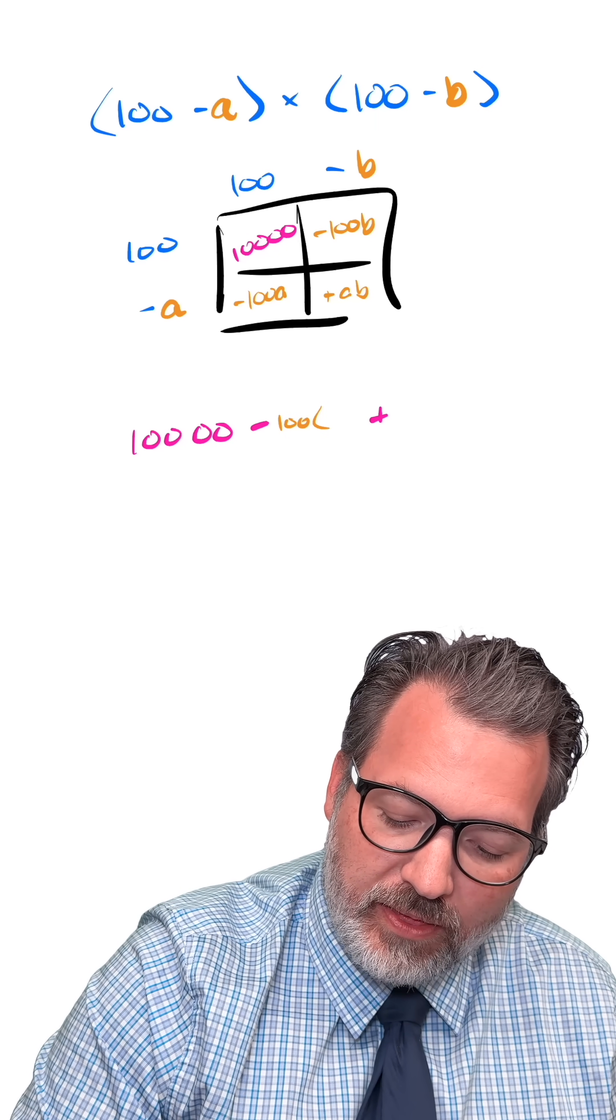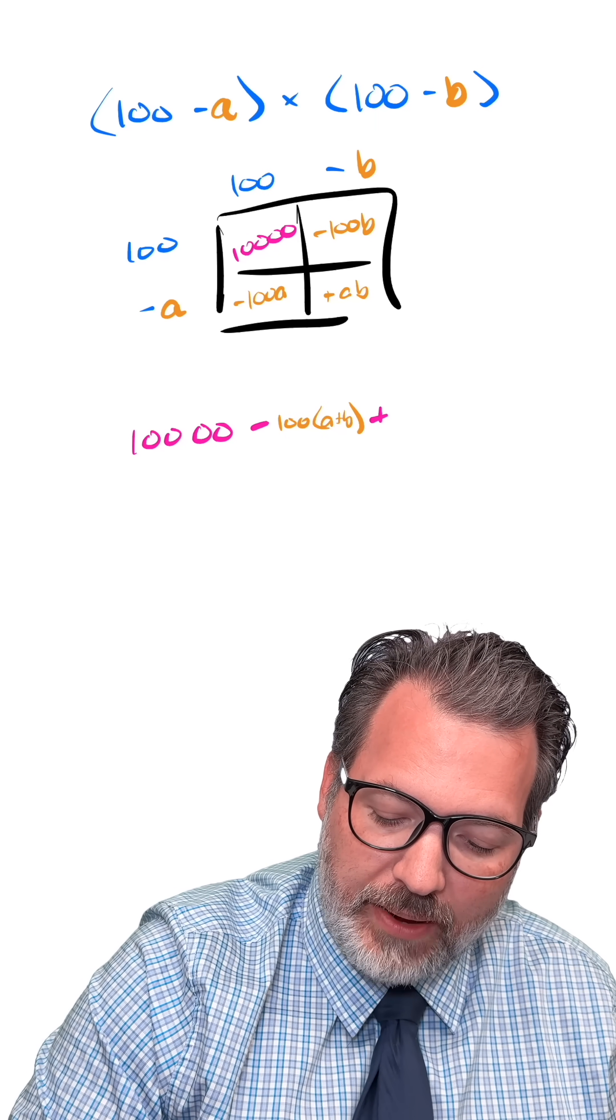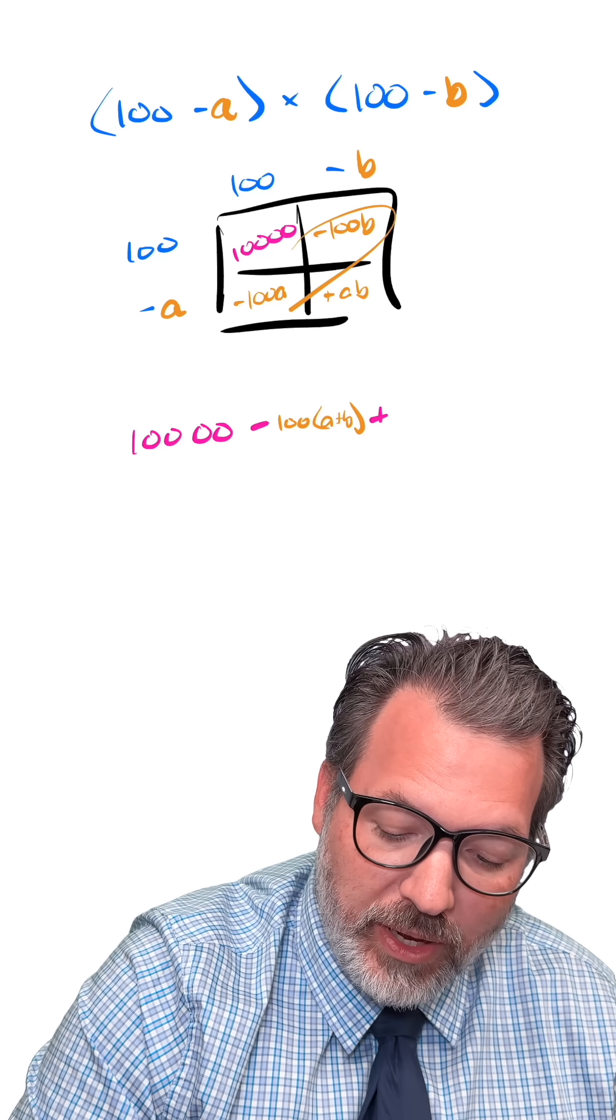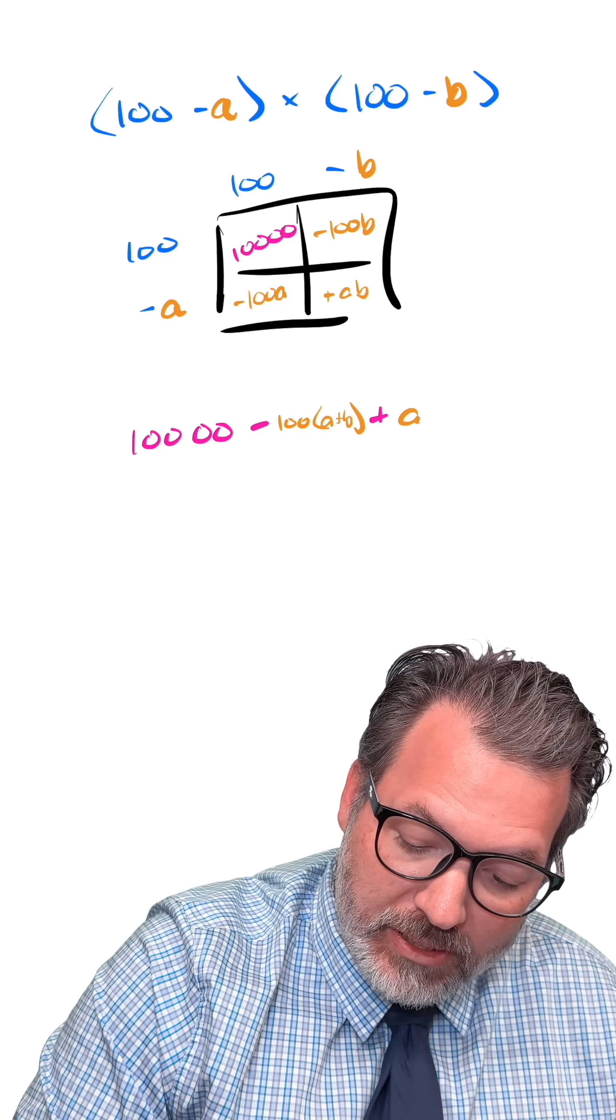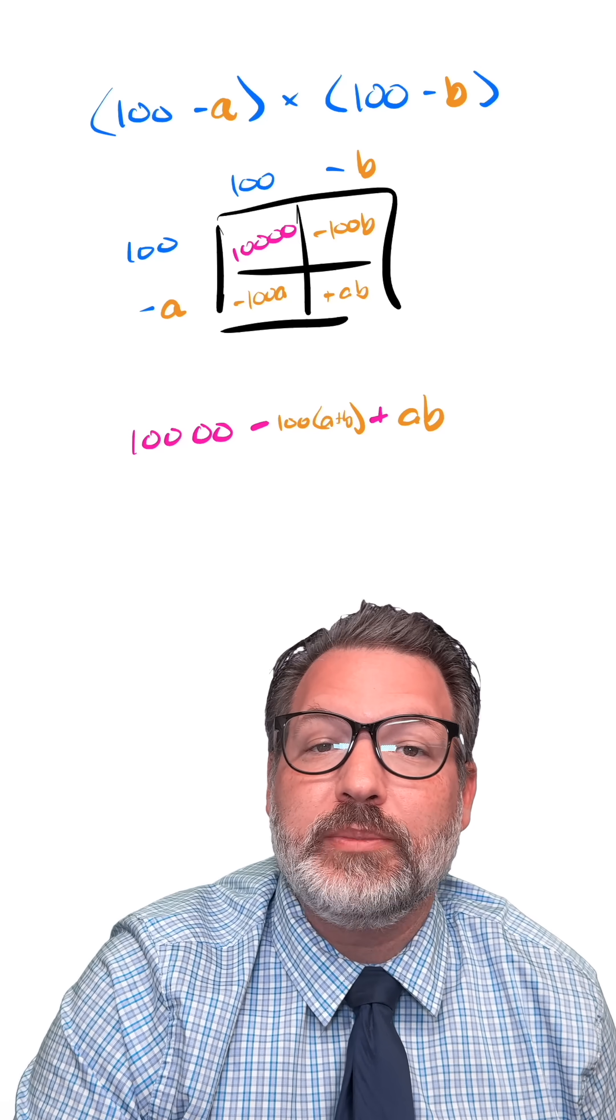Putting this all together, we're going to have 10,000 minus 100 times A plus B, because we can factor that common minus 100 out of those two different products, plus the positive product A times B.